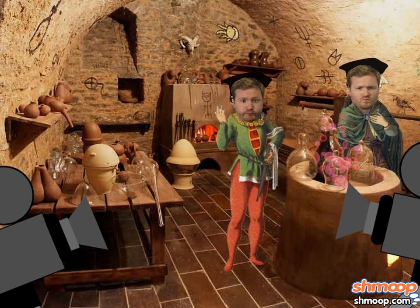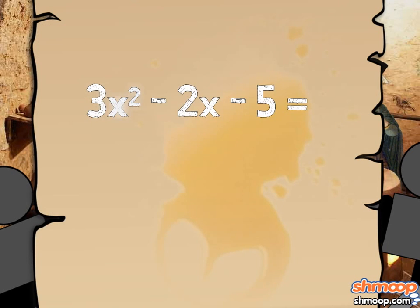Looks like they're going to subtract 2x and 5 from both sides, leaving us with 3x squared minus 2x minus 5 equals 0. We can see that a is 3, b is negative 2, and c equals negative 5.